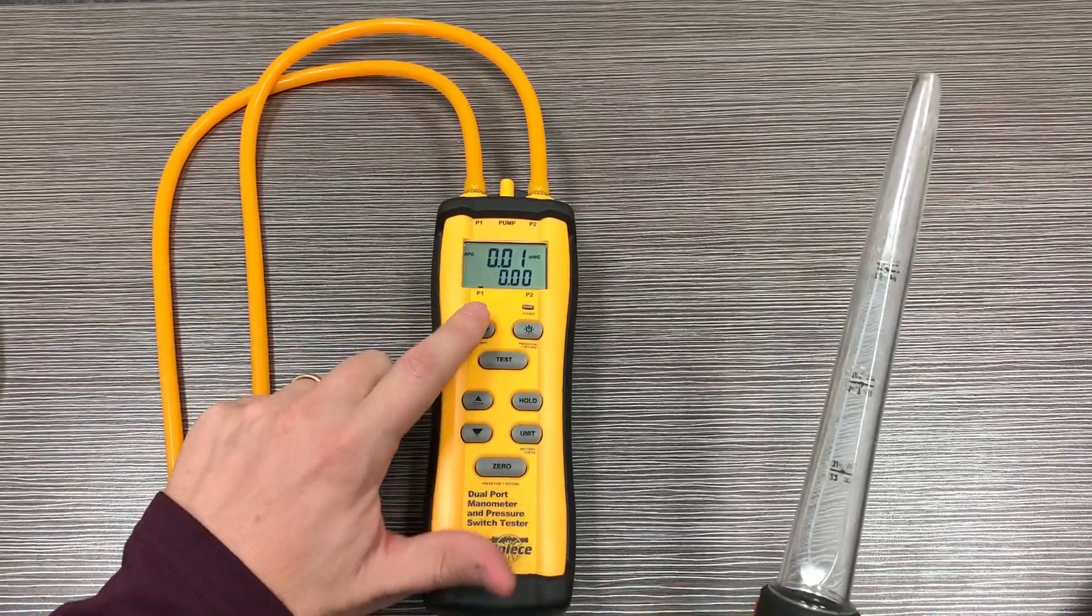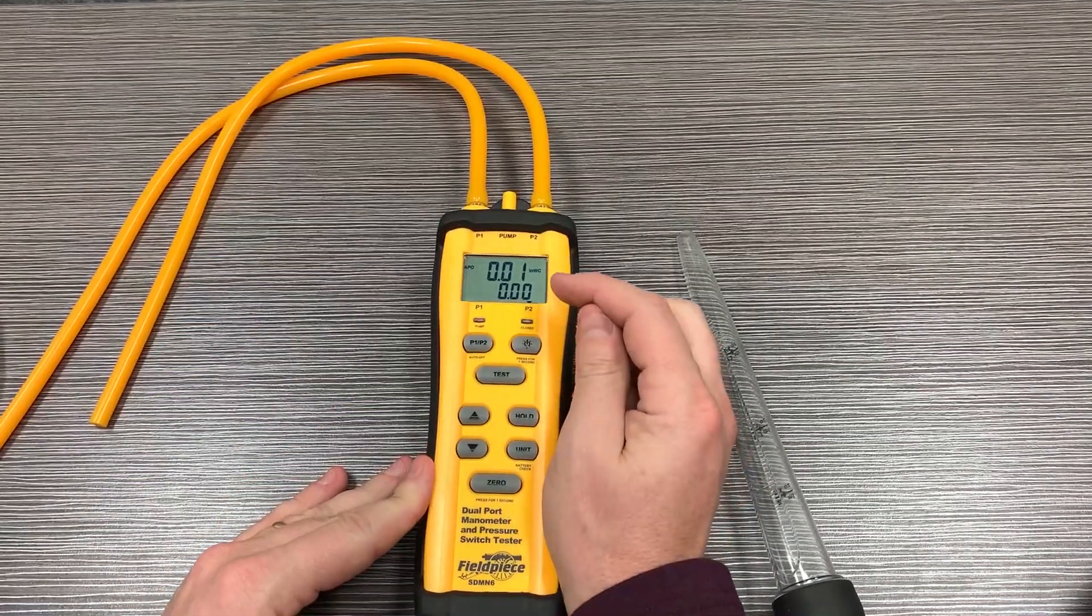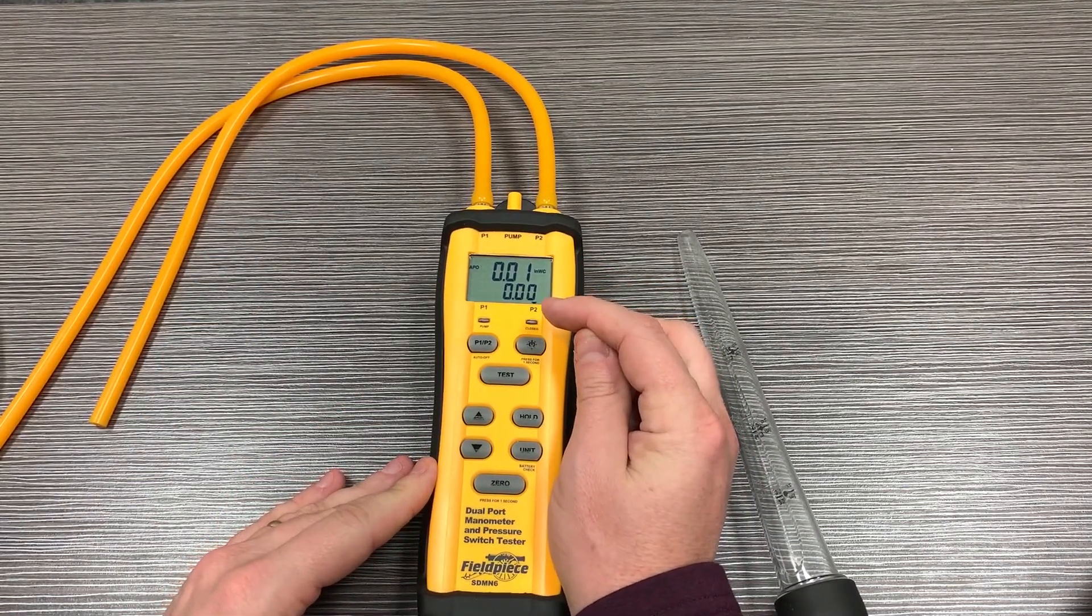Now let's switch it to our P2 measurement. When I do that, you'll notice our little indicator goes over to P2, and now what's shown here on top is going to be P2, and this is going to be delta P.